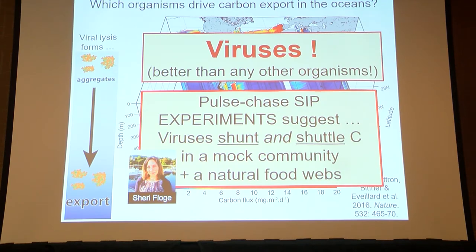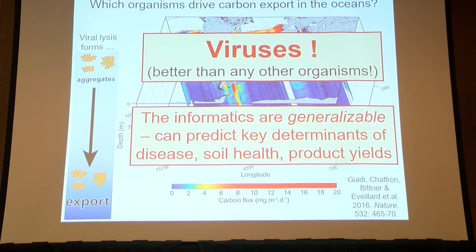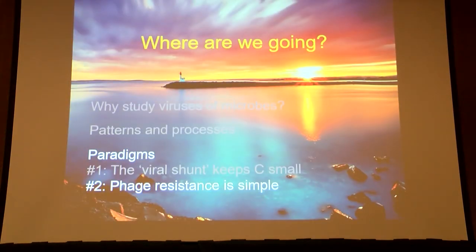We are firmly grounded in experiments. Sherry Flogey presented the idea of experimentally testing this using stable isotope probing measurements. Looking at both a mock community and a natural food web, she found quantifiable evidence of the viral shunt occurring at a low level and the viral shuttle occurring at a higher level — the idea that viruses can move carbon into bigger aggregates. This informatics framework is a nice generalizable predictive tool; you could apply it to predicting disease, soil health, or product yields.